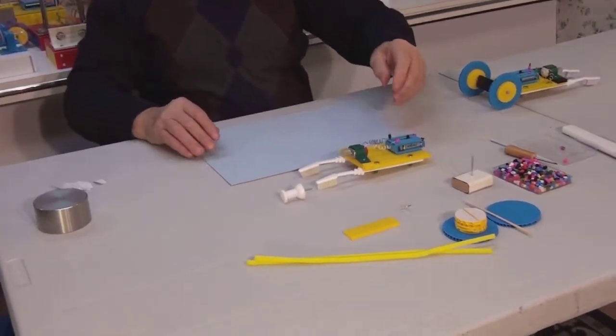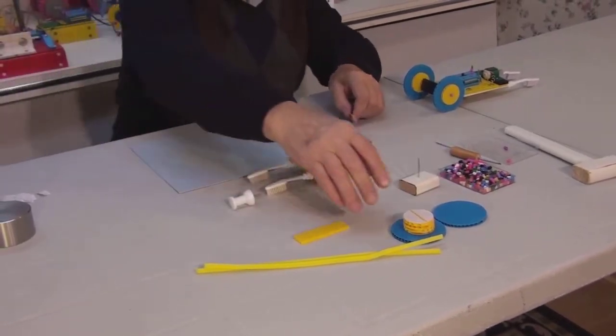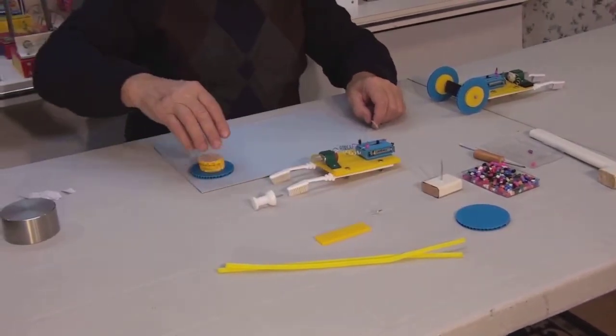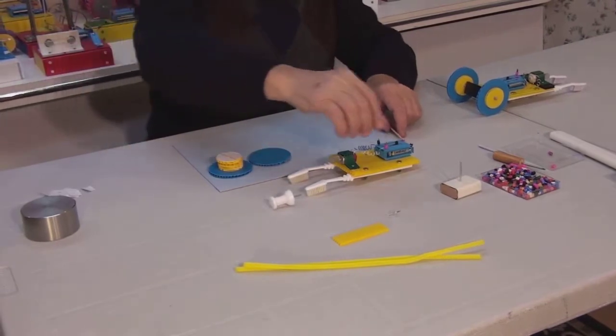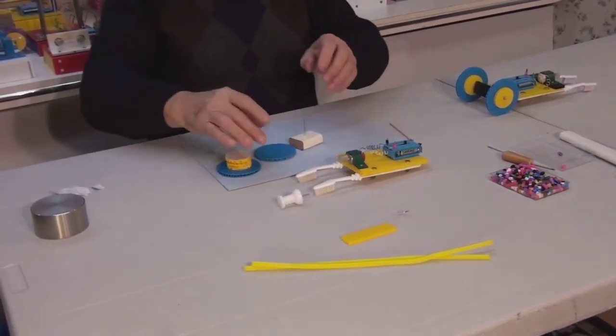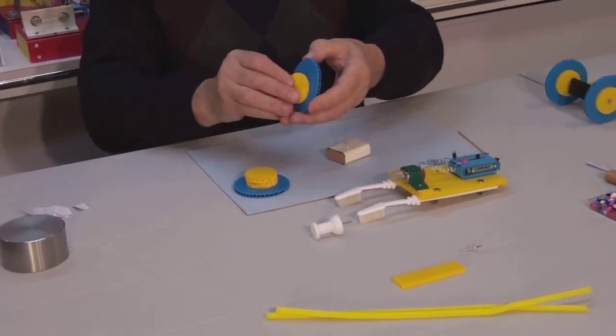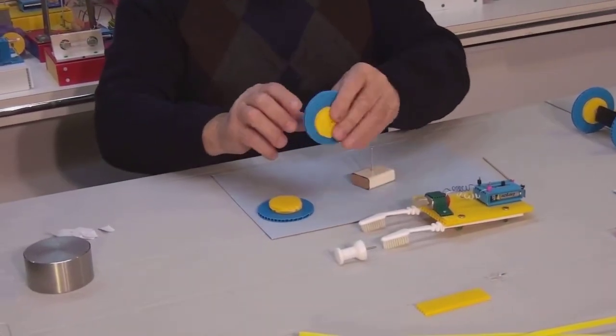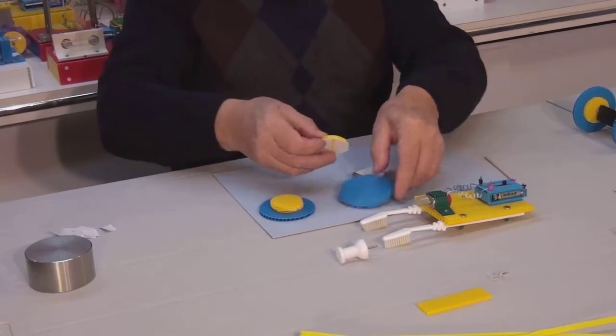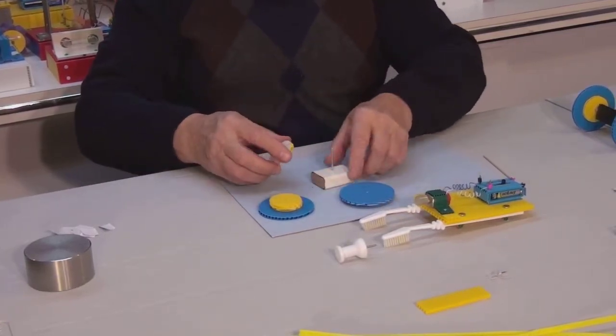Now we will begin to assemble the wheels. We will use this small device to help us with this task. Here we have a larger, thinner disk and two smaller disks, or hubs, which we will be attaching to both sides of the larger disk.